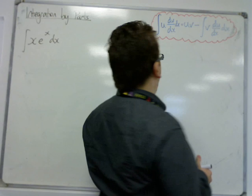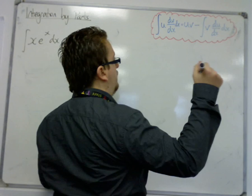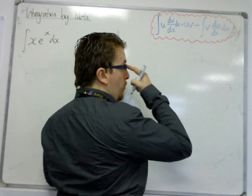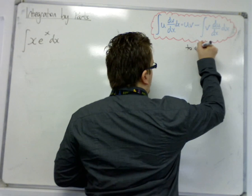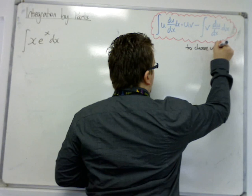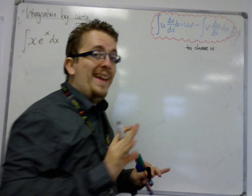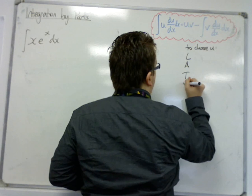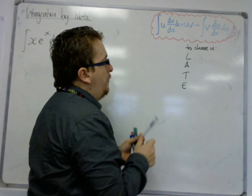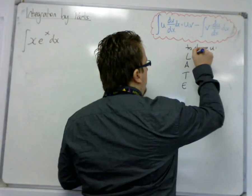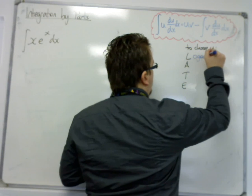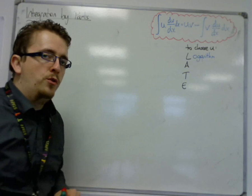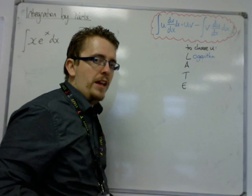The way best to remember how we're going to choose which is which, and which we're going to choose as u: to choose u, we follow the LATE rule. So L, A, T, E. If you spot a logarithm is in the integrand, then that should be your u before anything else.